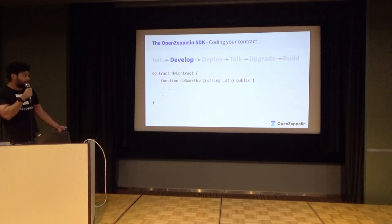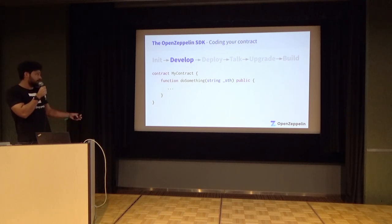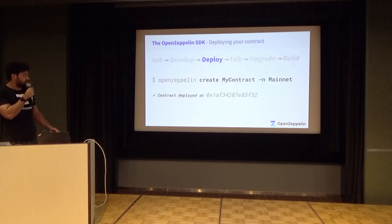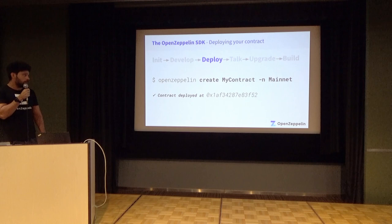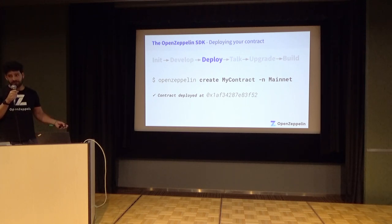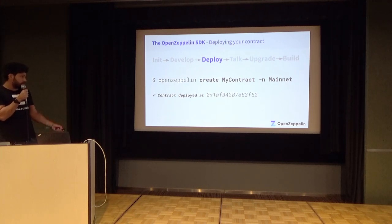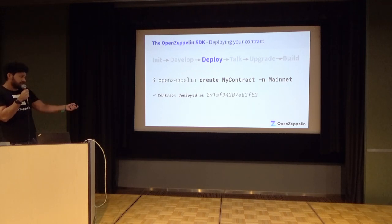You'll then probably want to write your contract — for example, a MyContract with a function called doSomething that receives a parameter. To deploy, you just run OpenZeppelin create, specifying the contract name and which network you want to deploy to. This isn't strictly necessary because all commands are interactive — if you don't specify the parameters or flags, you won't have any problem. It will deploy the contract to that address with just that command.